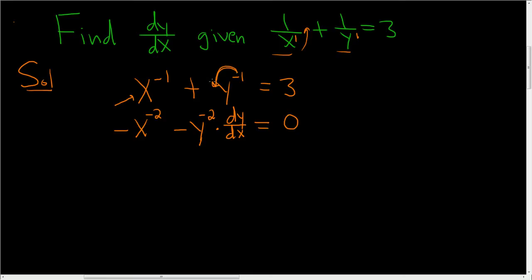This is just the chain rule. You just bring the negative 1 down, subtract 1, and then you multiply by the derivative of the inside. The inside here is y.